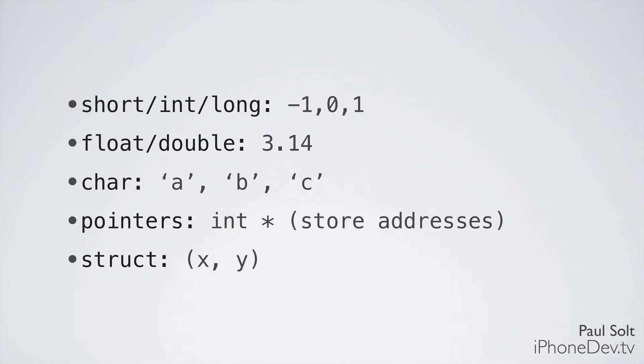After that, we have char, short for character. We have a single letter in quotation marks. Then there are pointers. You'll see something like int star. This is used to store addresses. Just like homes and businesses each have a unique address, computer memory has unique addresses where it can store information. Pointers are used to share addresses between different applications and different pieces of code. We'll get more into that later on.